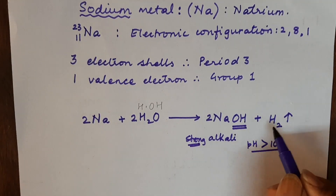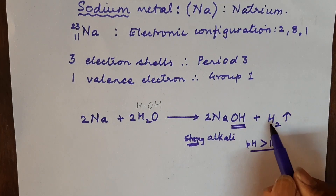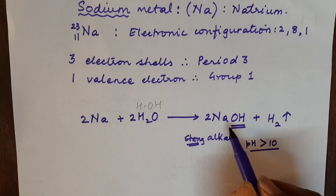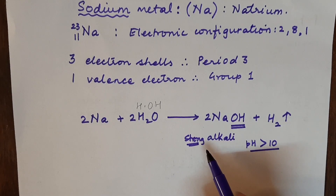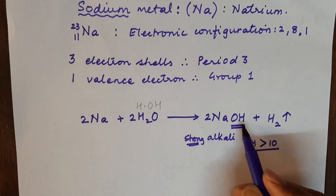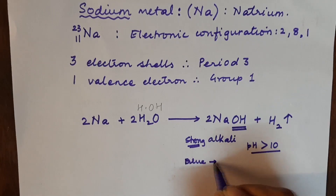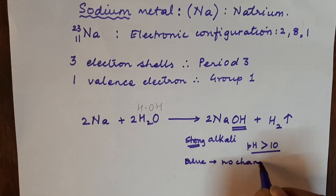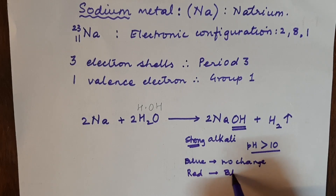Also understand that the hydrogen liberated is a colorless gas. The liberation of this hydrogen makes the reaction very violent, and that is why sodium must be reacted very carefully with water. This alkali reacting with litmus: blue litmus shows no change, but red litmus turns blue.